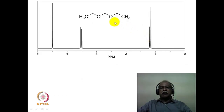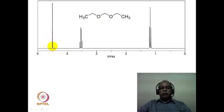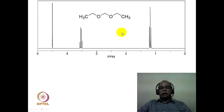Another example: this is again a symmetrical molecule, a fairly simple one. The CH2 flanked by two oxygens comes at the most deshielded region in the NMR, around 4.5 ppm, as a singlet because there are no coupling partners — only oxygen is adjacent to it. There is an ethyl group on each side, and because of molecular symmetry, these two ethyl groups are identical in chemical environment. So a single set of quartet and triplet is seen for both ethyl groups, with integration ratio of 2H, 4H, and 6H.